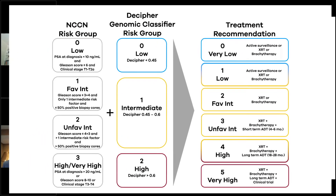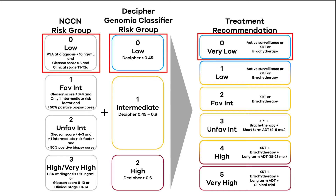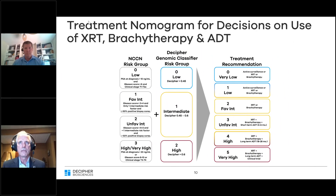Patients who have low-risk disease — NCCN low risk and a Decipher low risk — you can sum those numbers together and get zero. They're very low risk. Those patients should best be managed by active surveillance. But if they were unwilling to consider surveillance, we would offer them radiation therapy in the form of either external beam treatment or brachytherapy monotherapy.